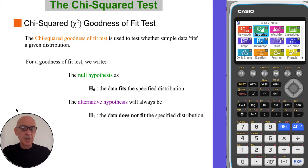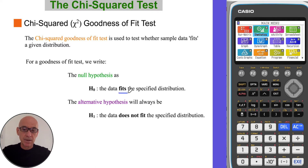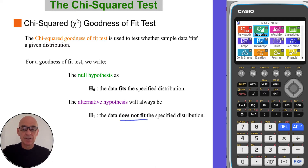The chi-squared goodness of fit test is used to test whether sample data fits a given distribution. For the null hypothesis we write: the data fits the specified distribution. In the alternative hypothesis: the data does not fit the specified distribution.